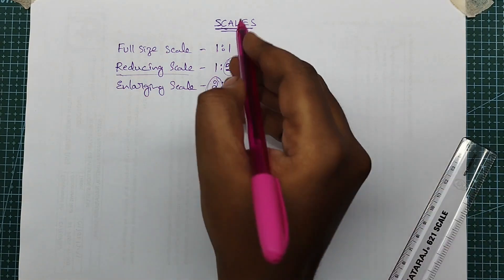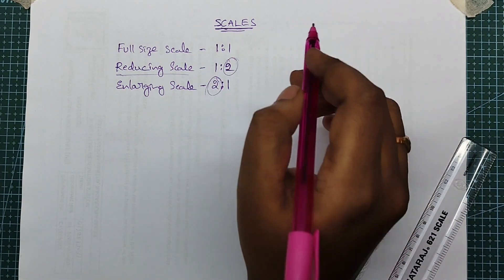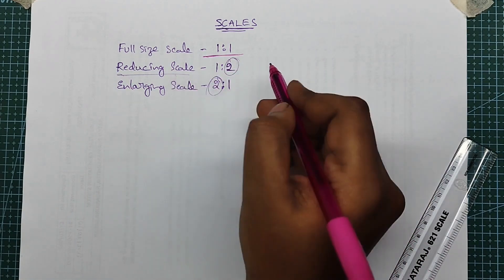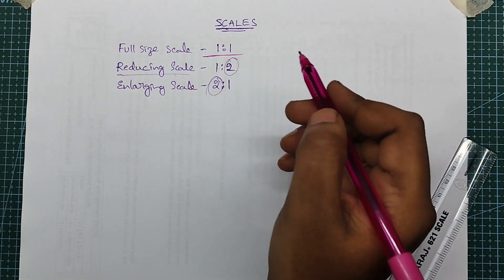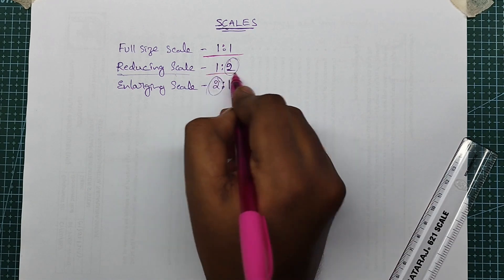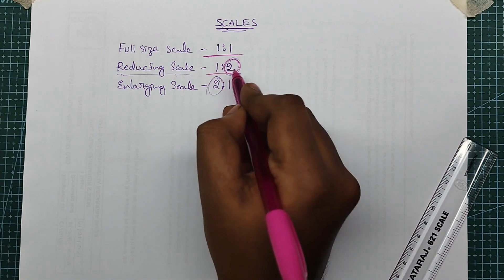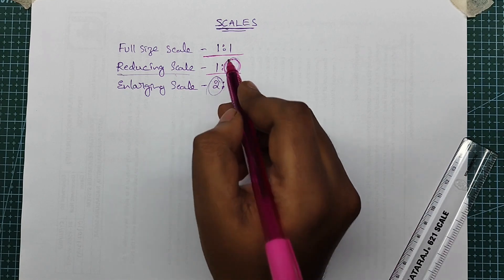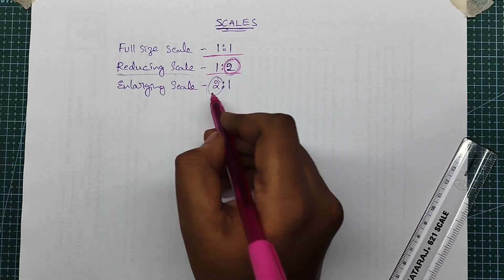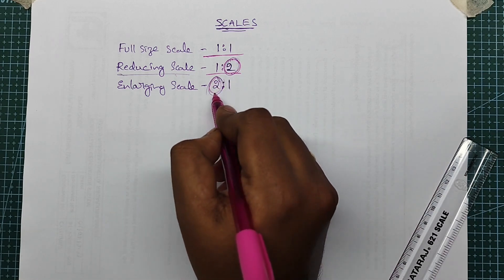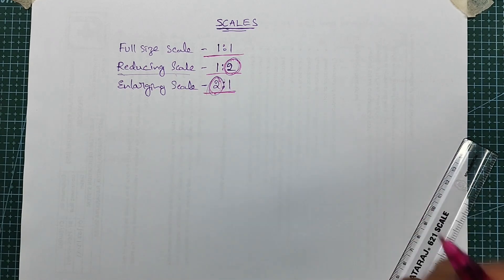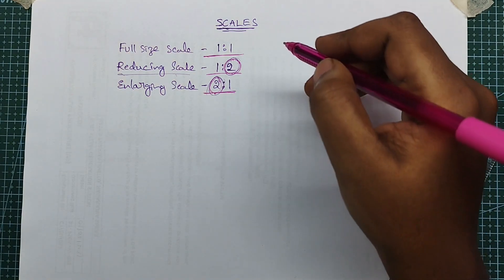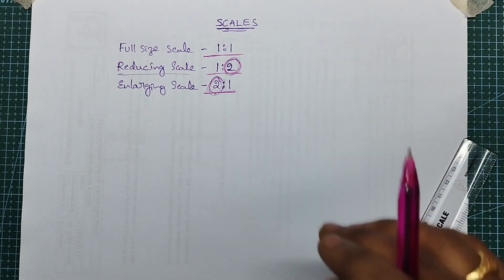At the same speed, 1 is to 1. If you reduce the scale figure it will be 1 to 2. If you choose the right side ratio, you will get the right side value. These are the three types of scale representation. There are five types of scales.